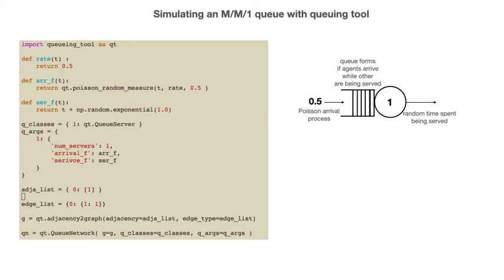Here is the code that sets up this type of queue using queuing tool. As discussed in my other video on this package, this final line is the first call to a method from the queuing tool package. Once we have called this constructor function for the queue network object, we can call methods such as simulate. We are going to focus on the various arguments that are passed to the constructor in this line.